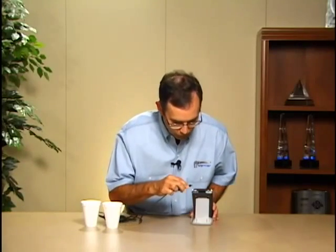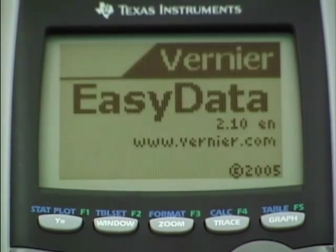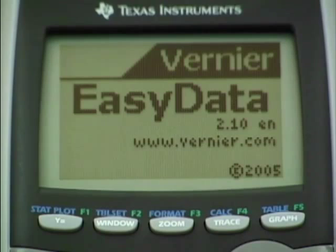Now currently the calculator is off. All I have to do is plug the EZTEMP into the calculator. It wakes the calculator up, launches the data collection application, identifies that a temperature probe is plugged in, and then I have a screen that shows me the current reading from the temperature probe. In this case it's around 24 degrees Celsius.